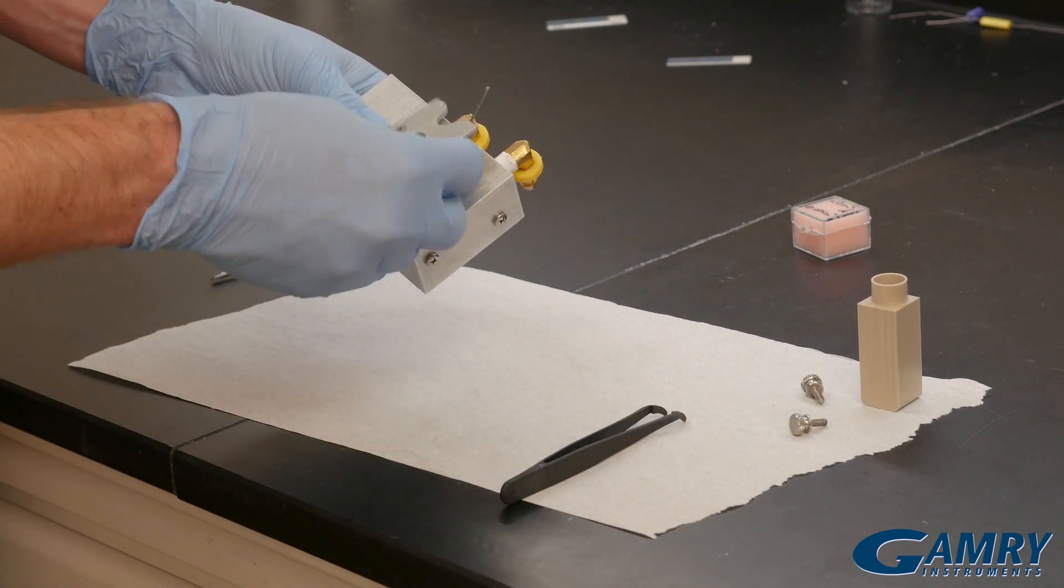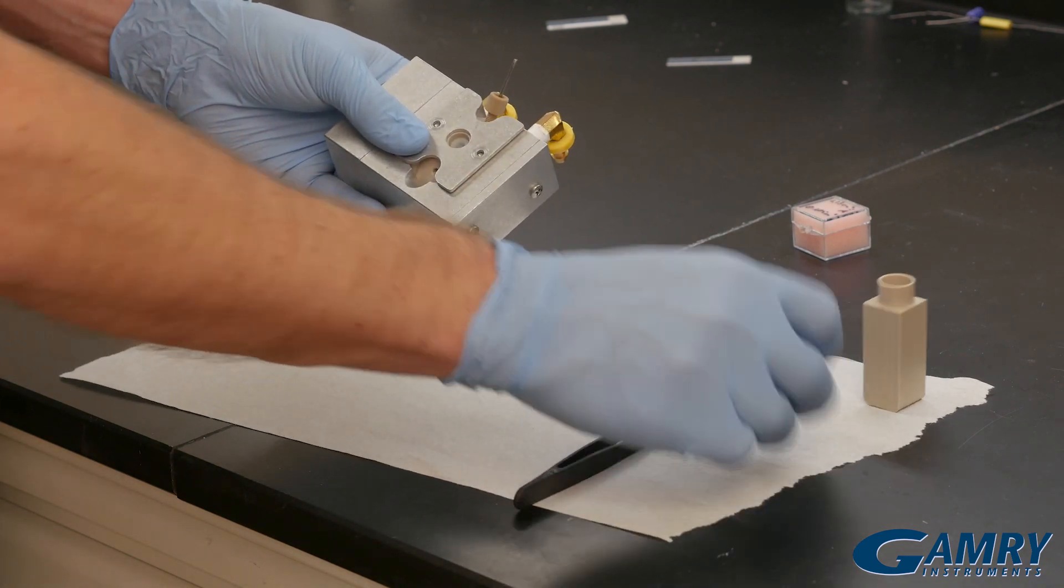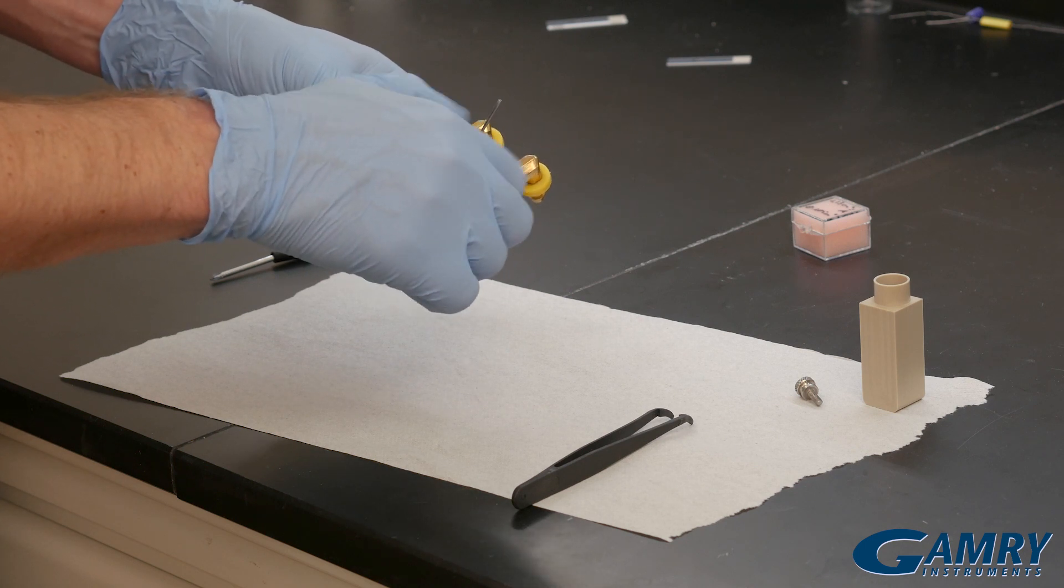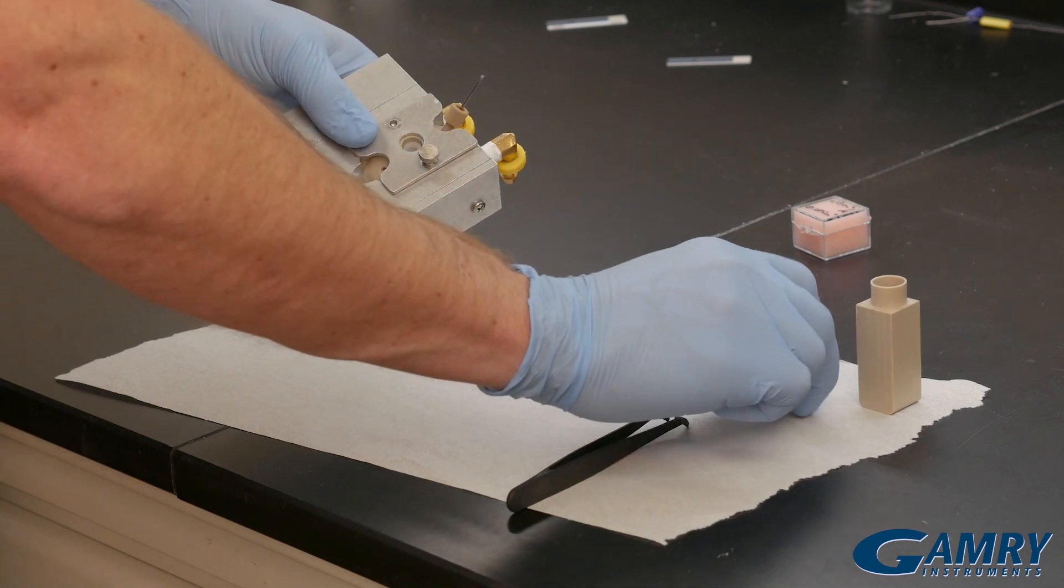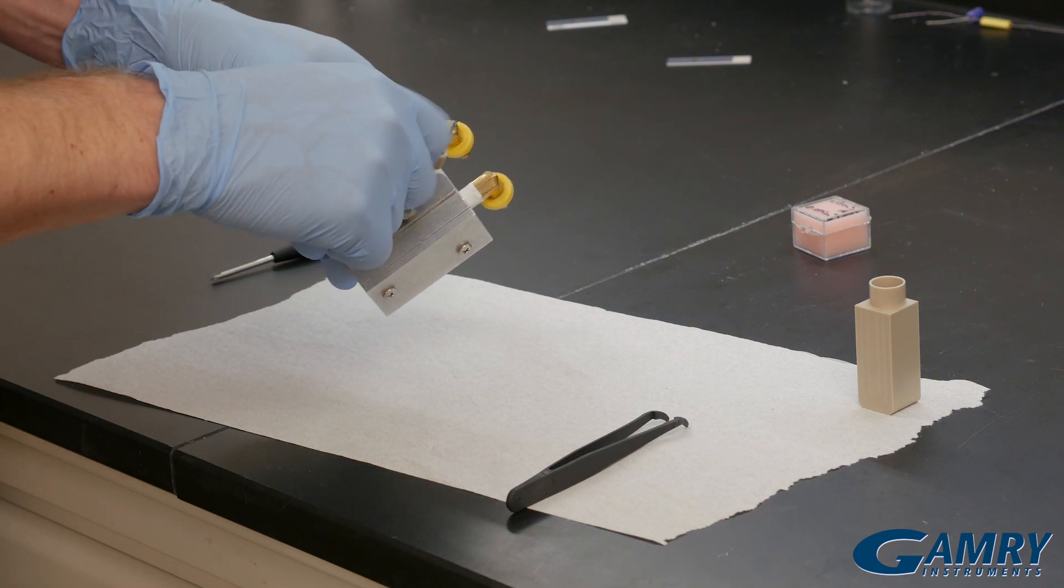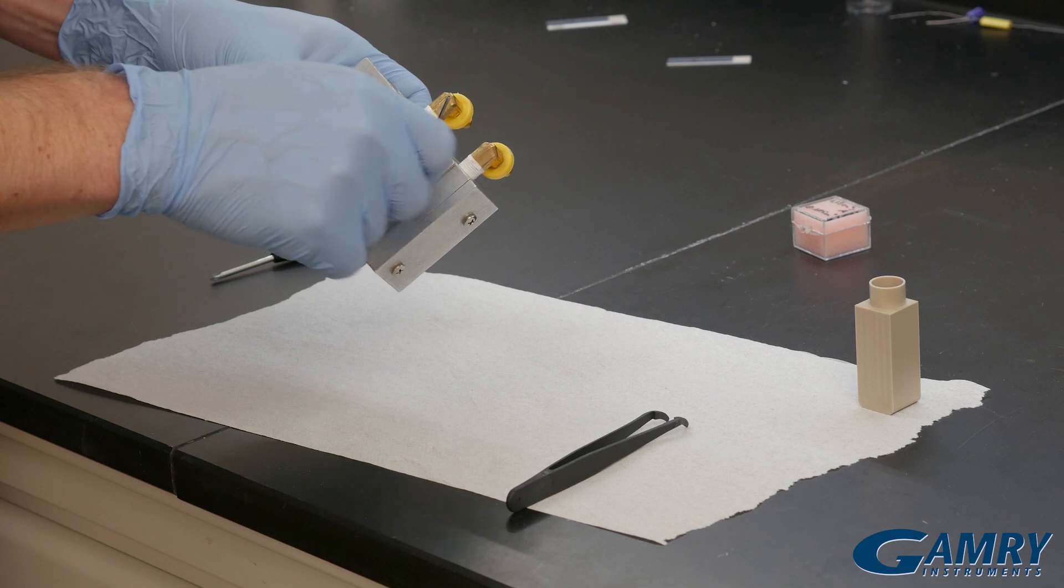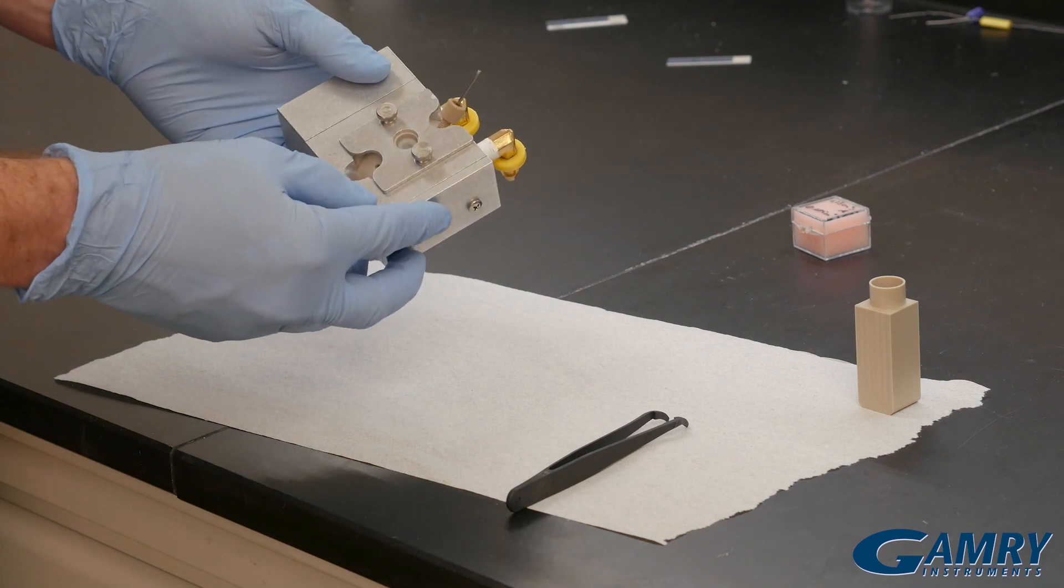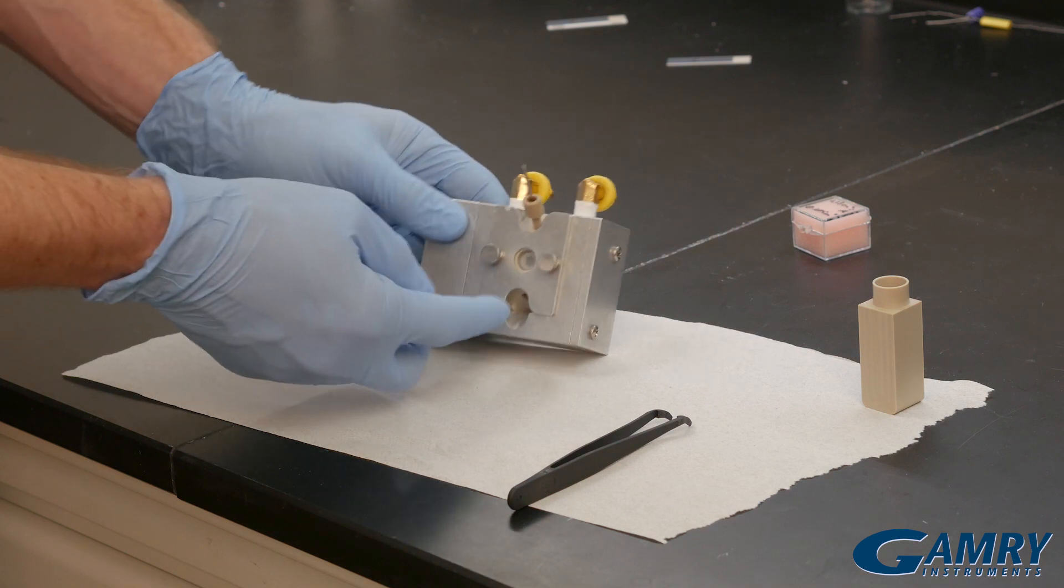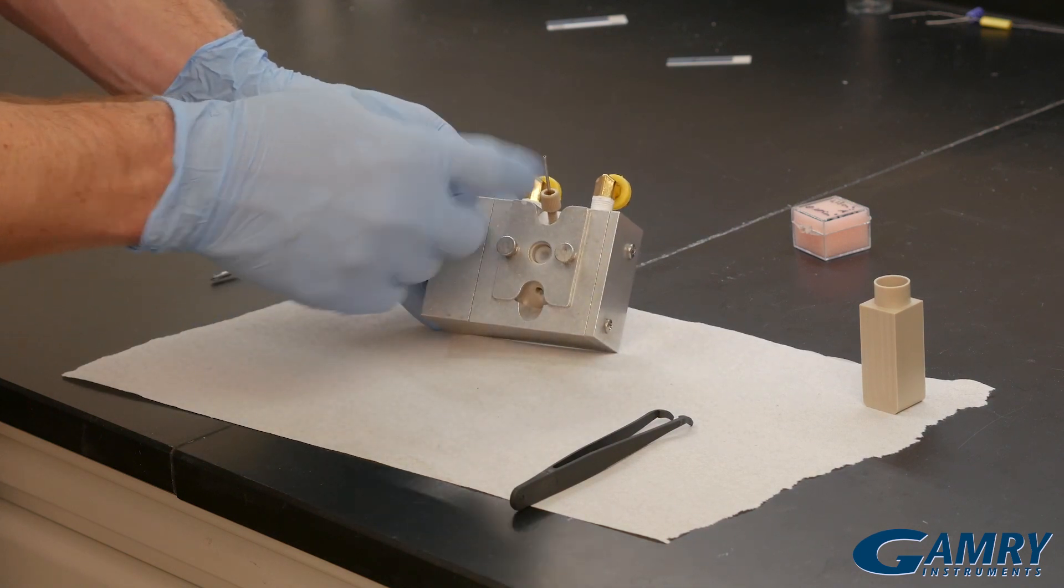So the flow module fits in right in the same place. Again we can use our capture plate to hold the flow module on. We tighten everything down using the thumb screws, and next we're ready to connect our tubing to the inlet and the outlet.